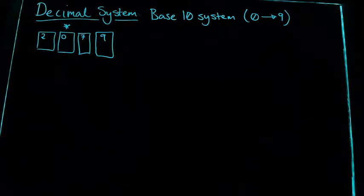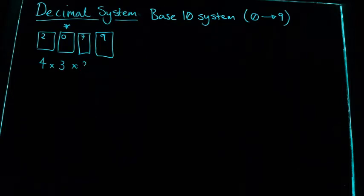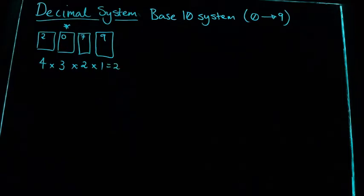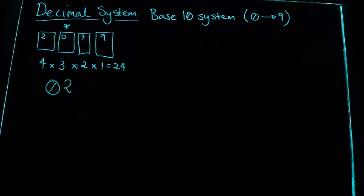I don't want to list all combinations, but with four digits: whatever number we put in the first place, we've got three cards to choose from next, then two, then one. So we multiply through: four times three is 12, times two is 24, times one is still 24 — so there are 24 different combinations. Probably the smallest number is 0, 2, 7, 9.